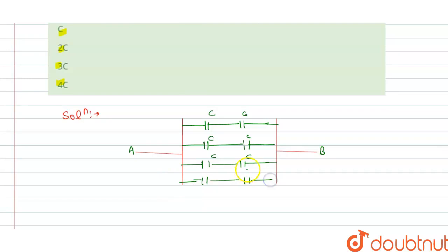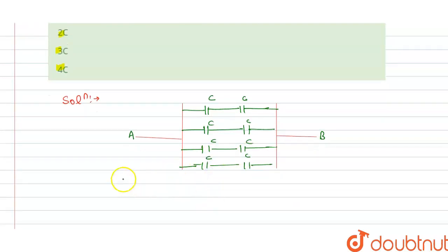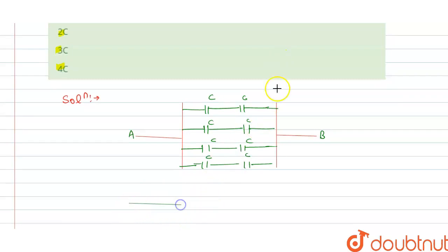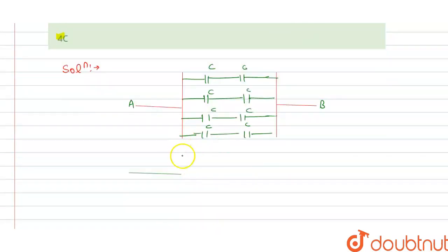And this is the equivalent circuit diagram, so we have this is connected to A and this is connected to B.